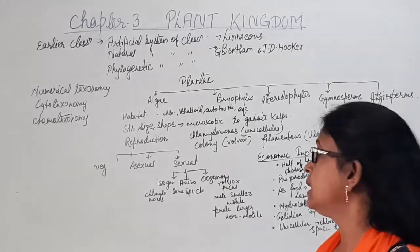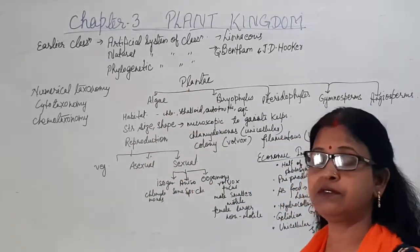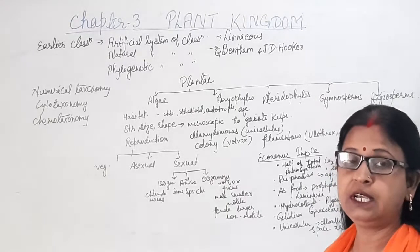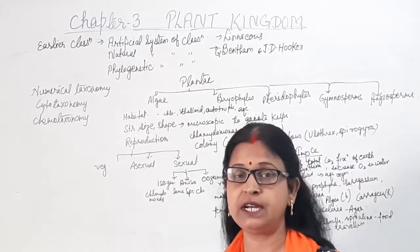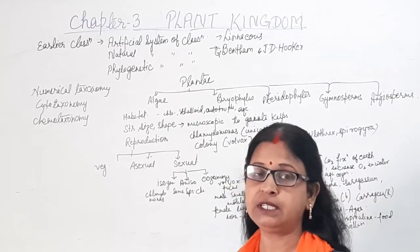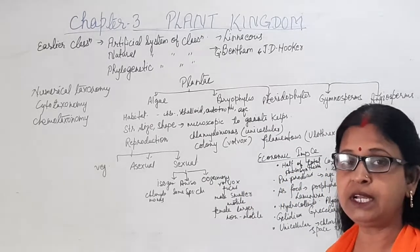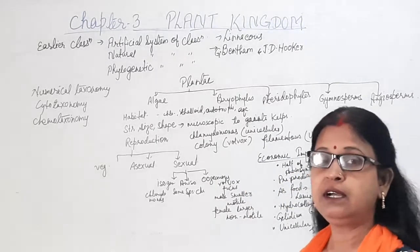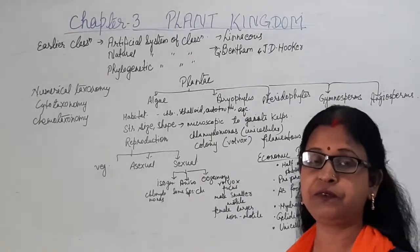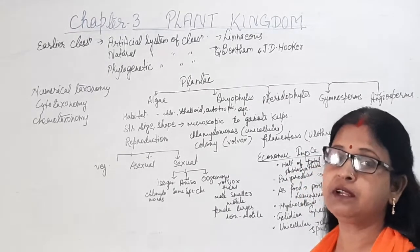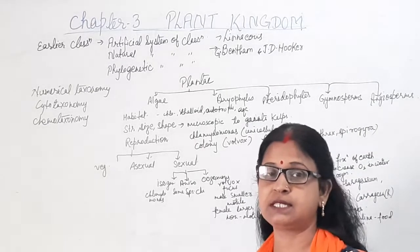Later on, the phylogenetic system of classification came, in which the phylogenetic relationship of a plant or organism with others was also included in the classification system. Accordingly, organisms with similar characters were assumed to belong to the same group.